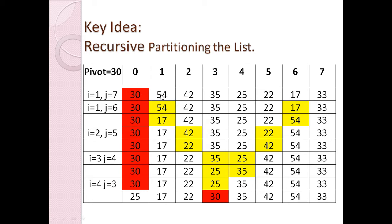Now we start one index i from the left side, moving left to right, and we search for an element greater than the pivot element. Wherever we find an element greater than the pivot, we stop. So i starts at one and stops immediately because that element is greater than the pivot.